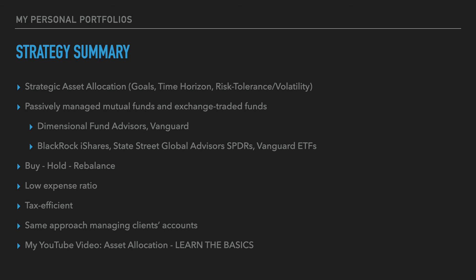The investments found in my portfolios are passively managed mutual funds and exchange traded funds. The passively managed mutual funds are created by asset management companies such as Dimensional Fund Advisors and Vanguard, and the exchange traded funds are created by BlackRock iShares, State Street Global Advisors Spiders, and Vanguard ETFs. I follow a buy, hold, and rebalance approach. The expense ratios in each of my portfolios is very low. Portfolios outside of retirement accounts managed this way tend to be very tax efficient with a low turnover rate and low distributions.